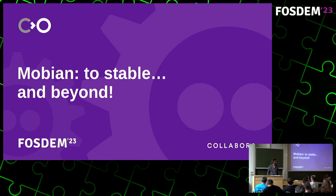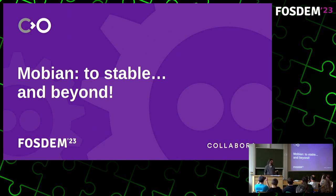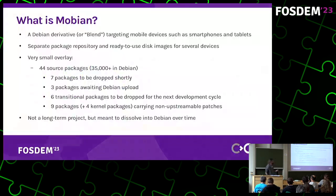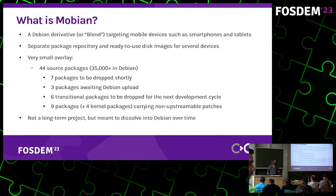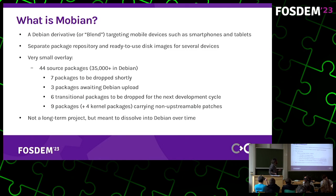Thank you everyone for attending this presentation. The title is 'Mobian to Stable and Beyond,' because right now we've only been doing development releases. So, what is Mobian? You could think of it as a Debian derivative — or, in Debian language, a blend — which is targeting mobile devices such as smartphones and tablets.